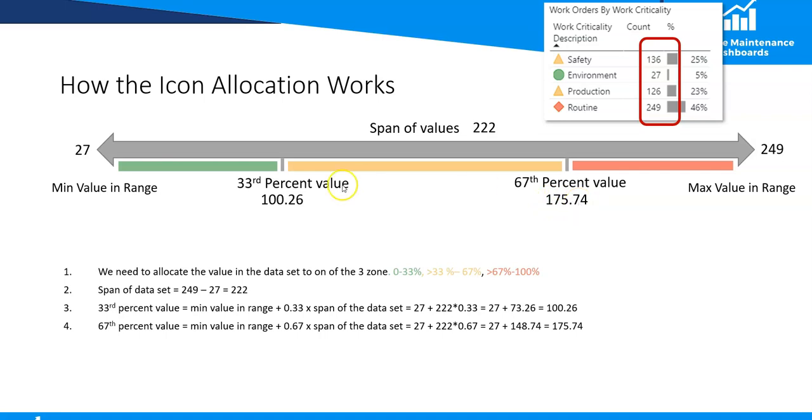So now we've got the 0% value which is effectively 27, we've got the 100% value which is 249, and we've got this 33% value and the 67% value. Next it allocates the numbers that we've got in our table here to each of these different spans or categories.